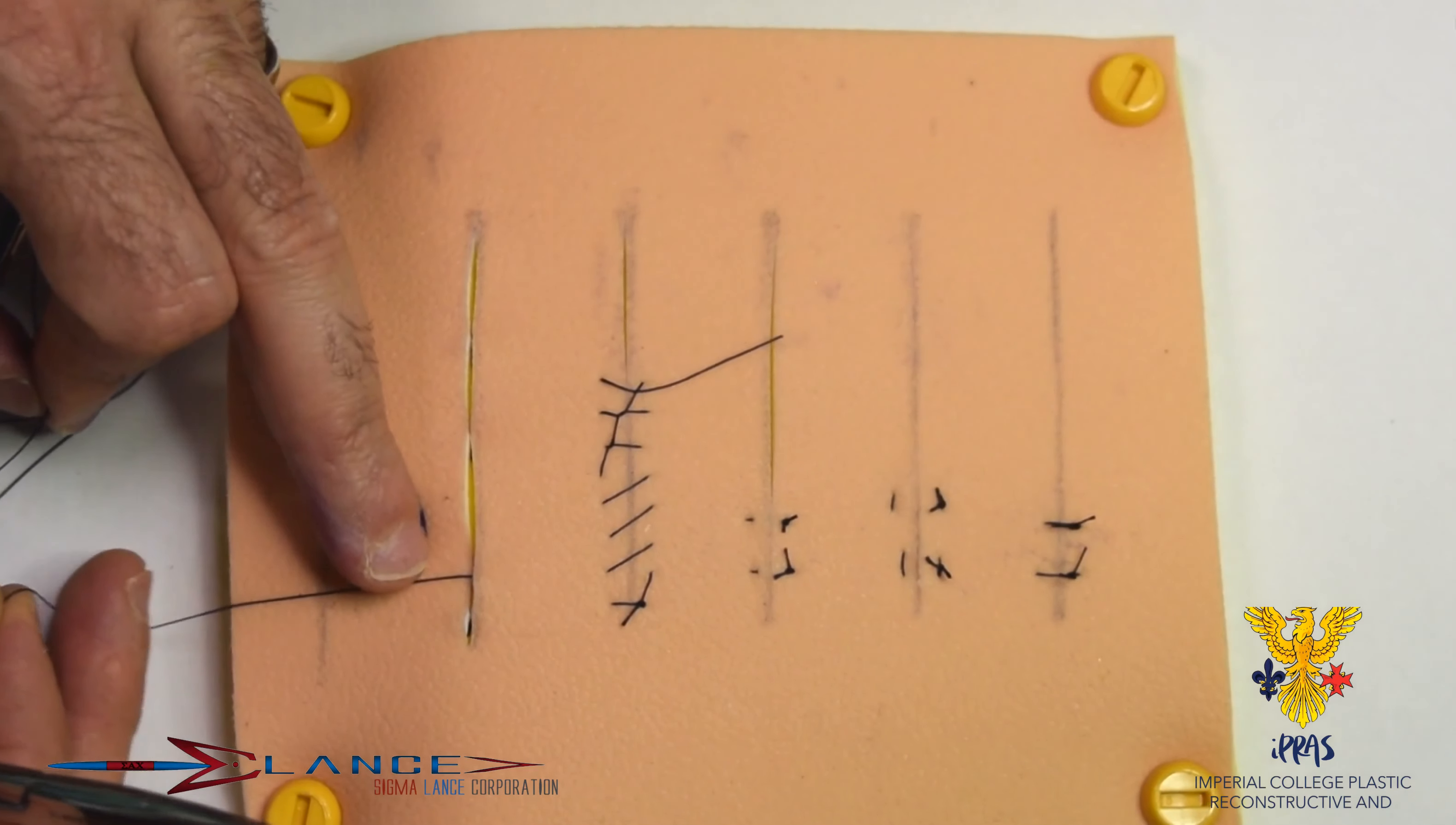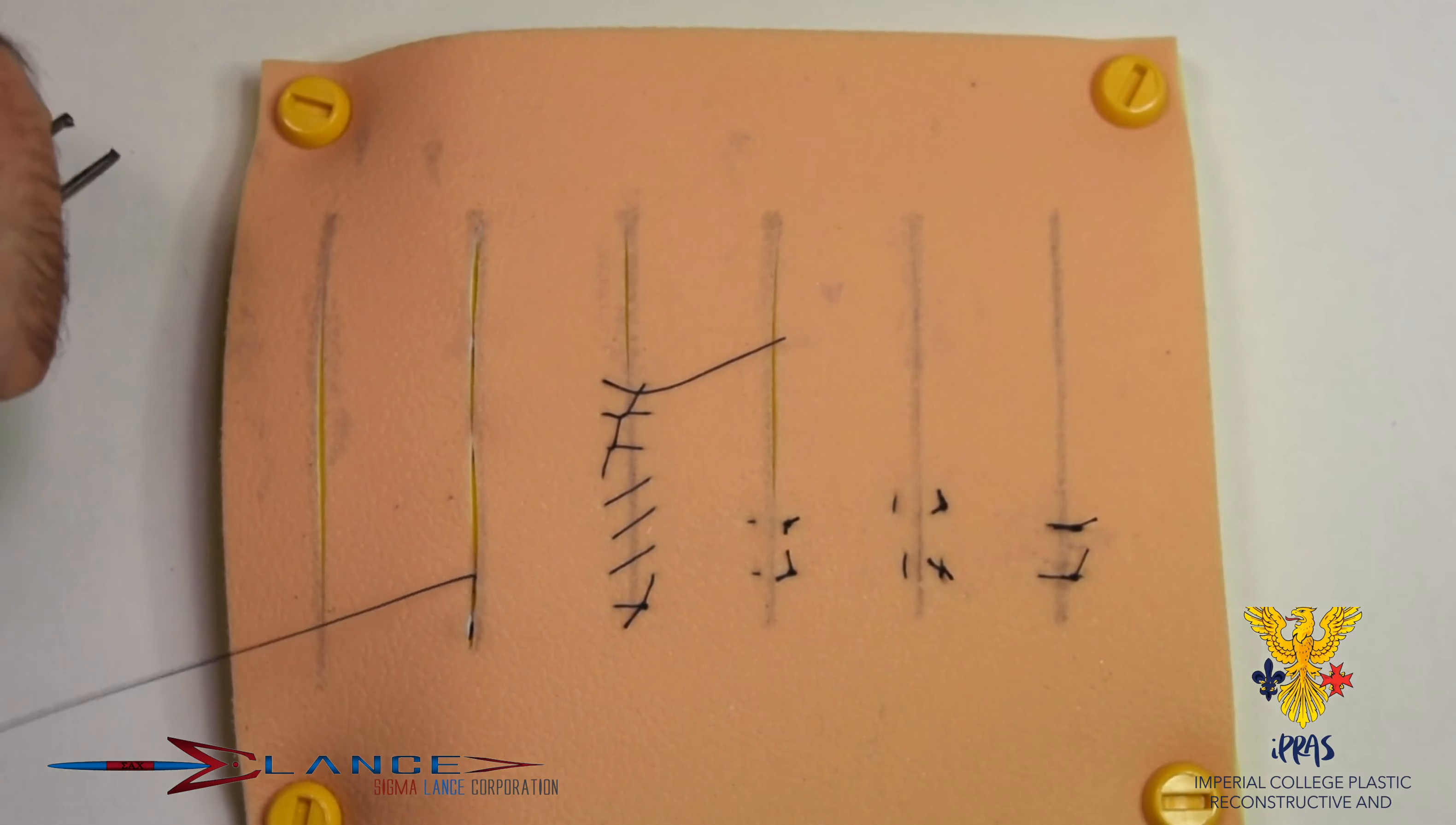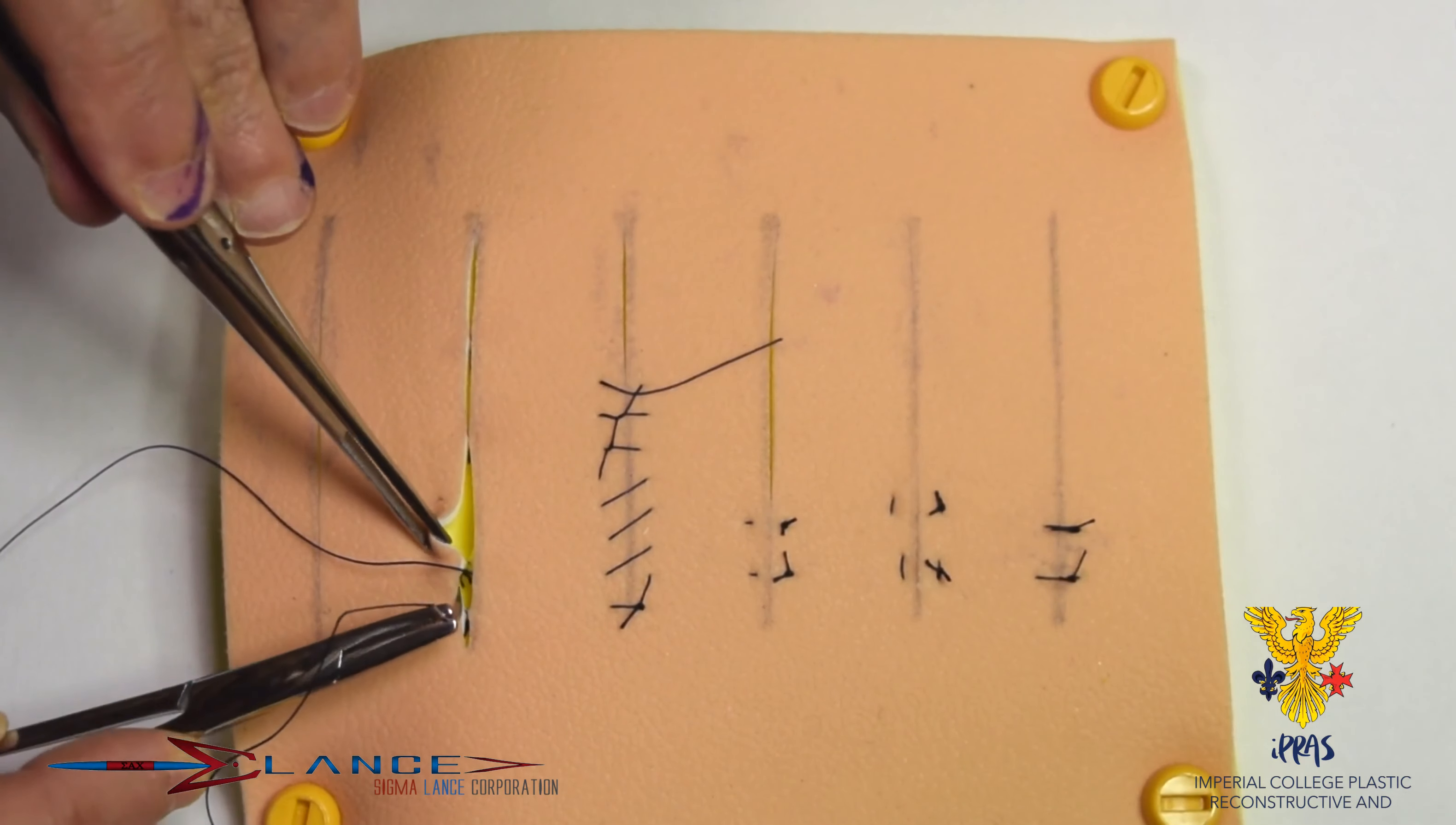And the next bite on my side really should begin just a little bit behind where the suture is sitting. So what we're talking about is that the next bite really should not be here, otherwise the wound won't close. The next bite needs to be behind where that suture is coming out.